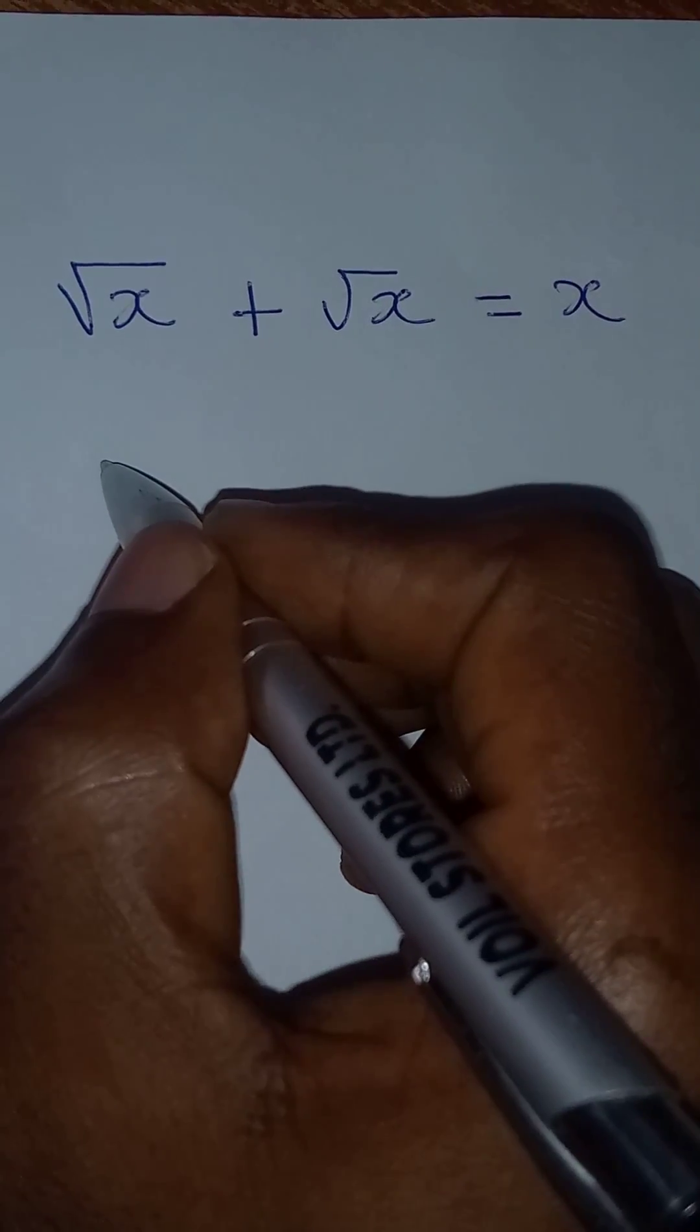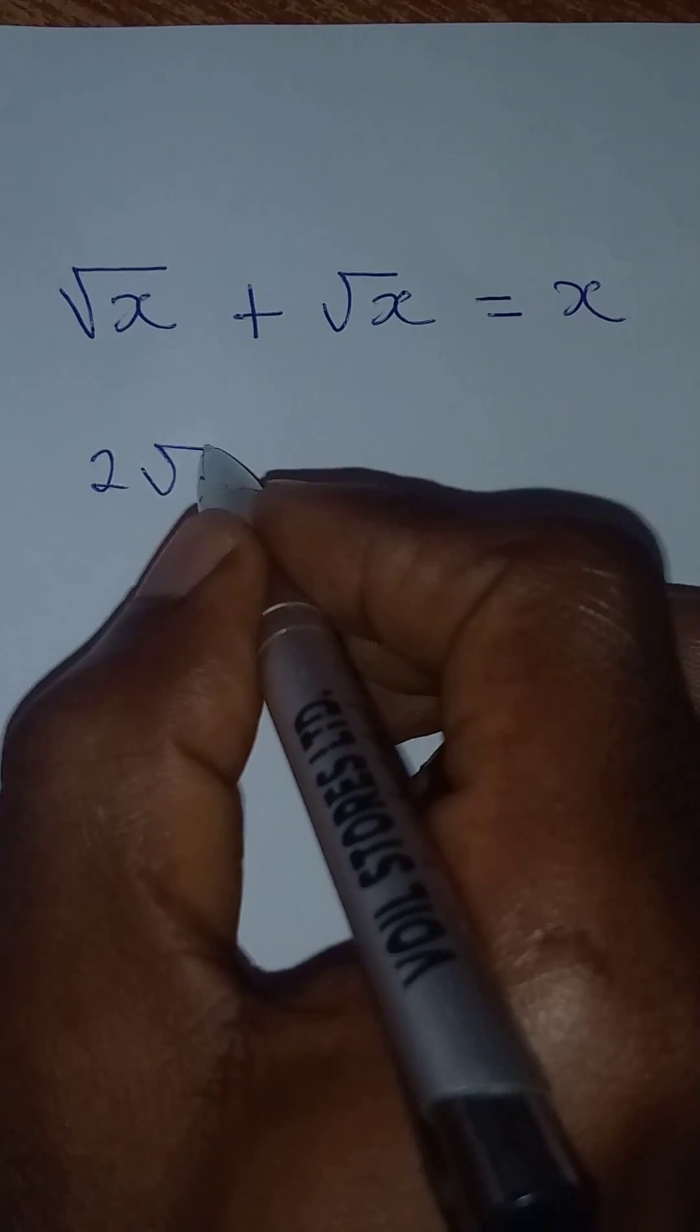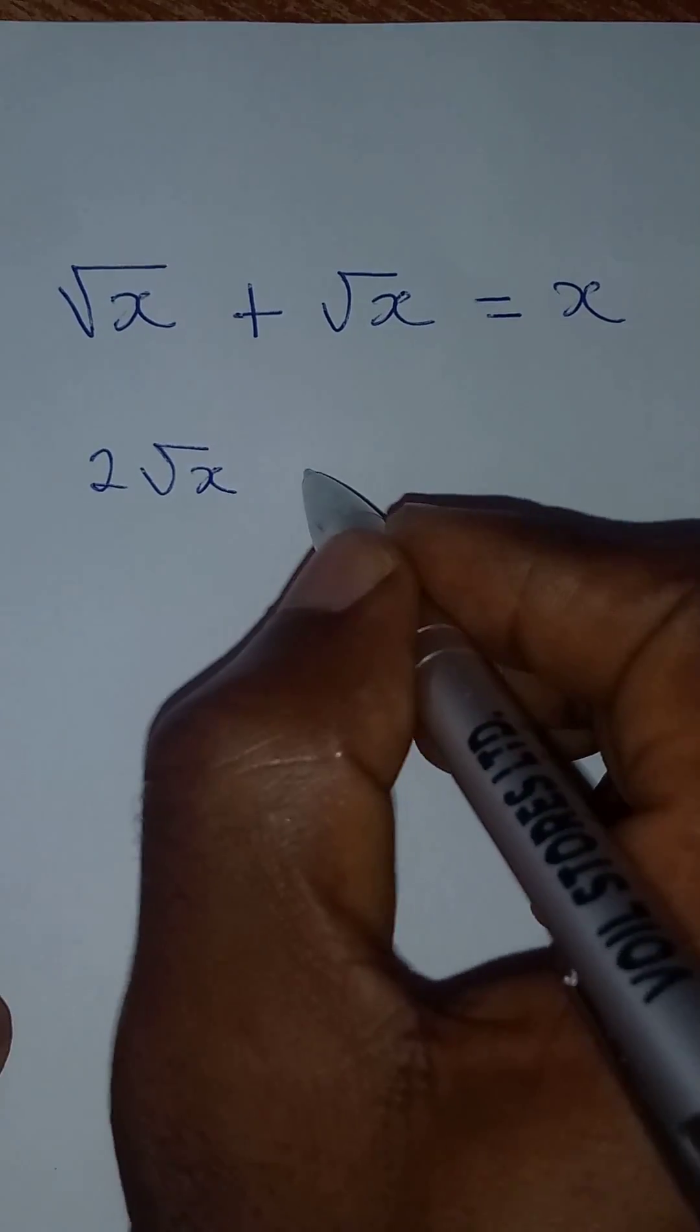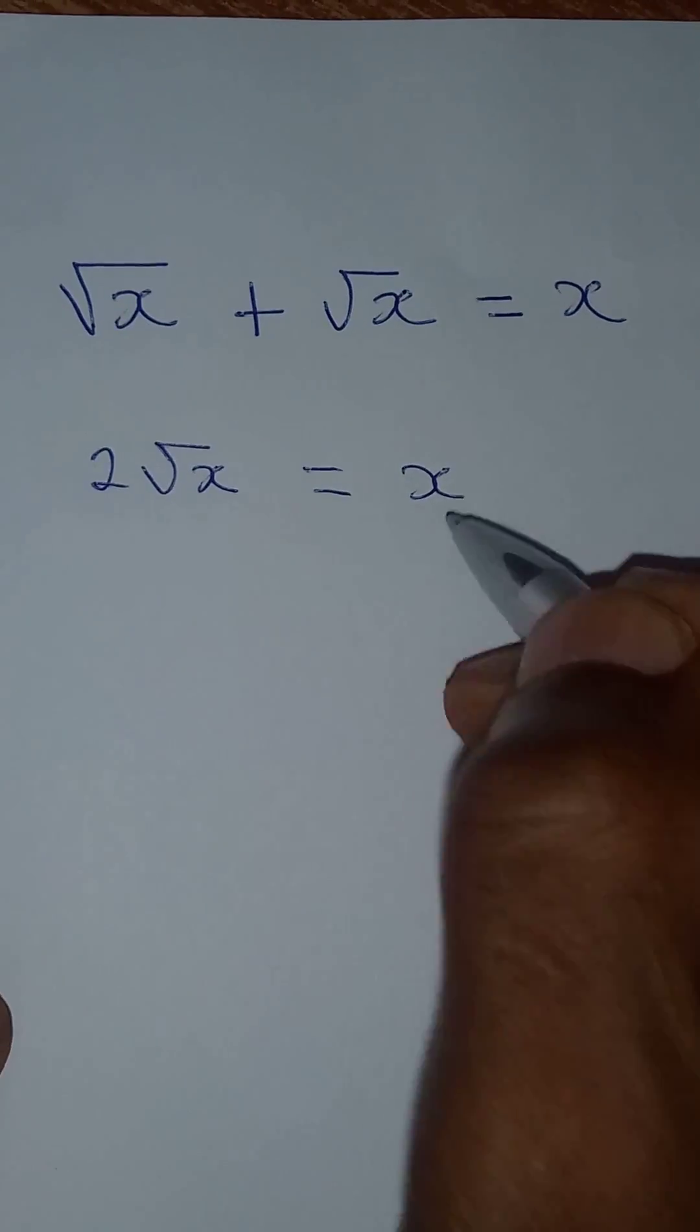And what does this mean? It means that we're having two square root of x to be equal to x.